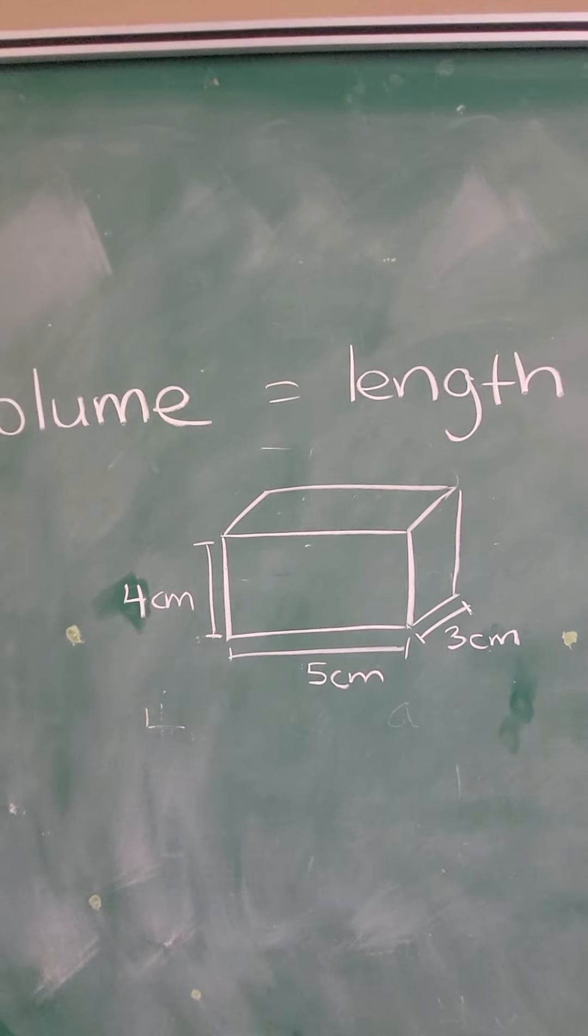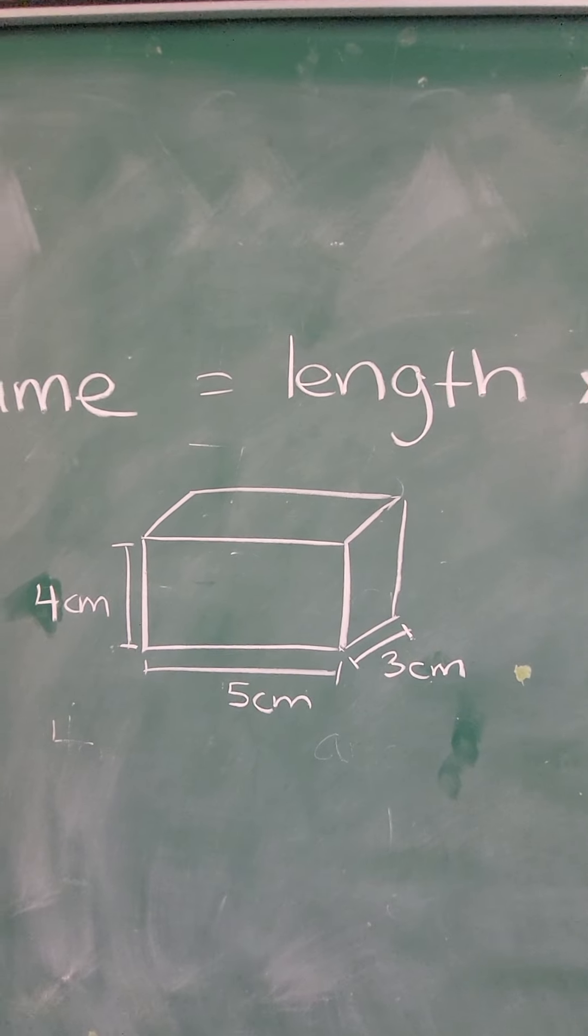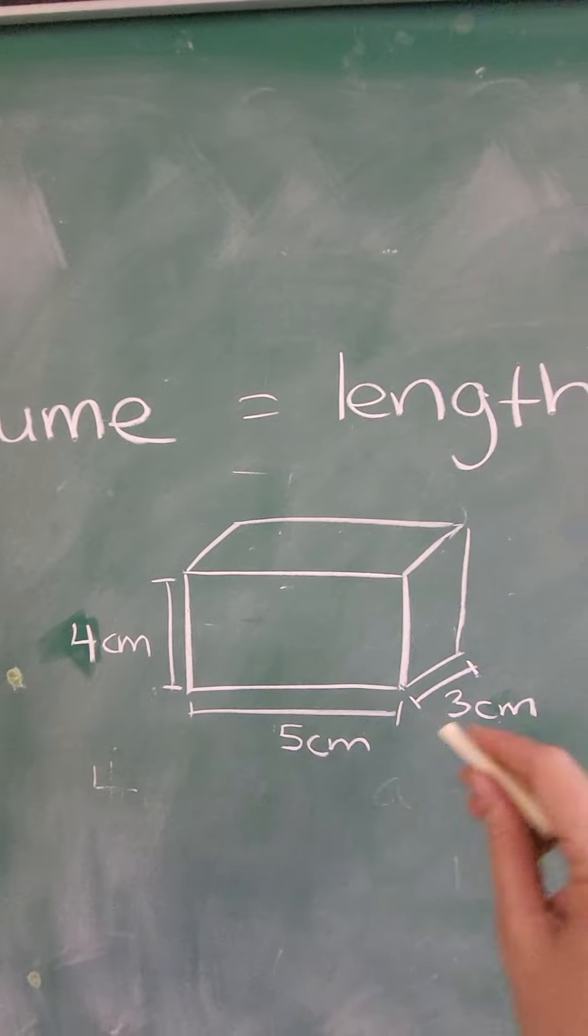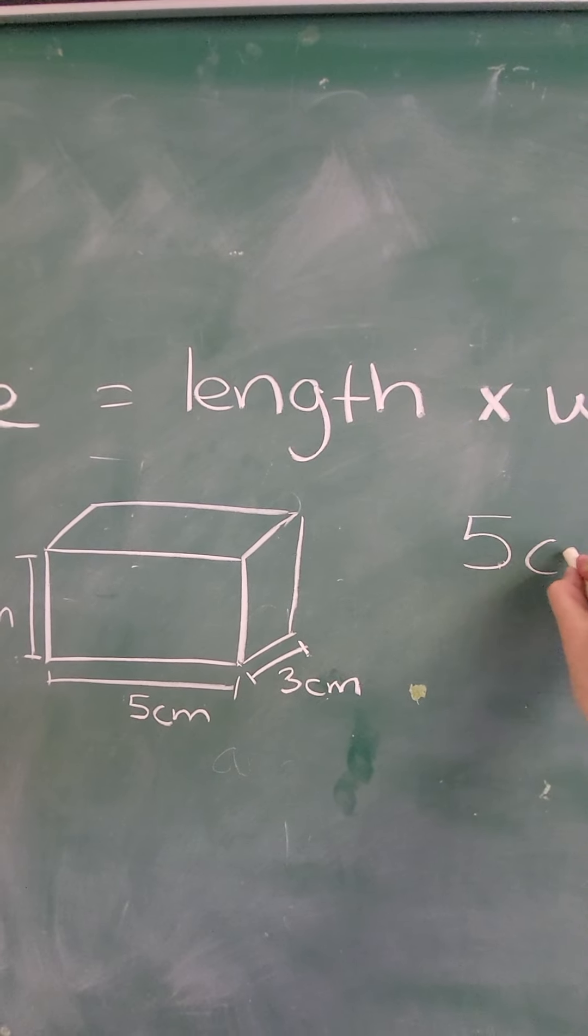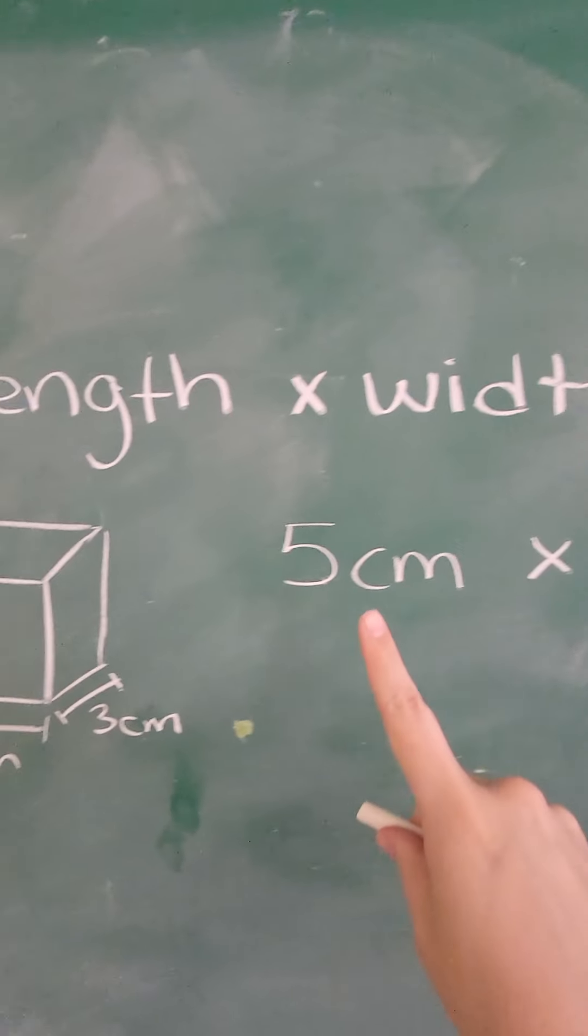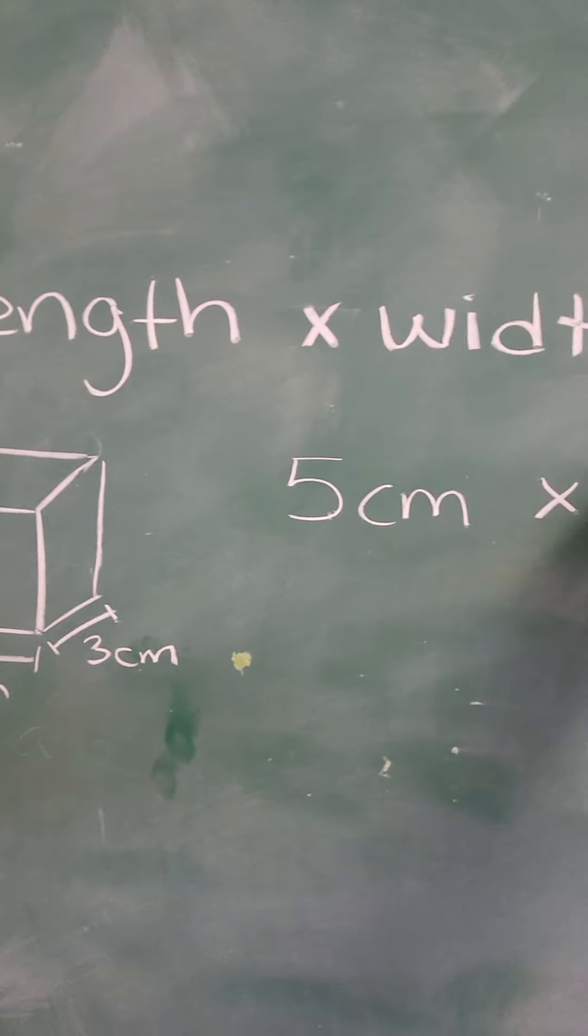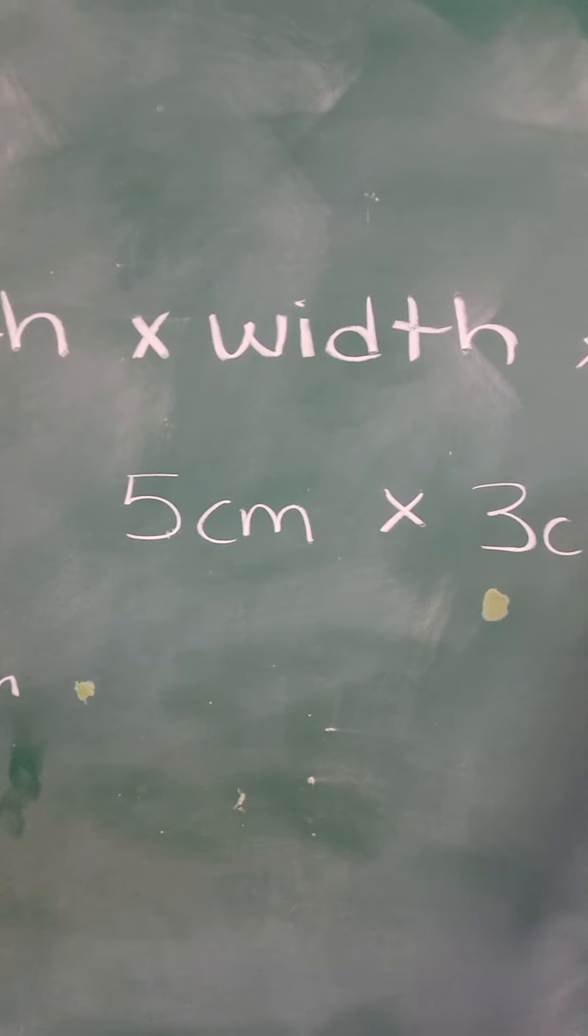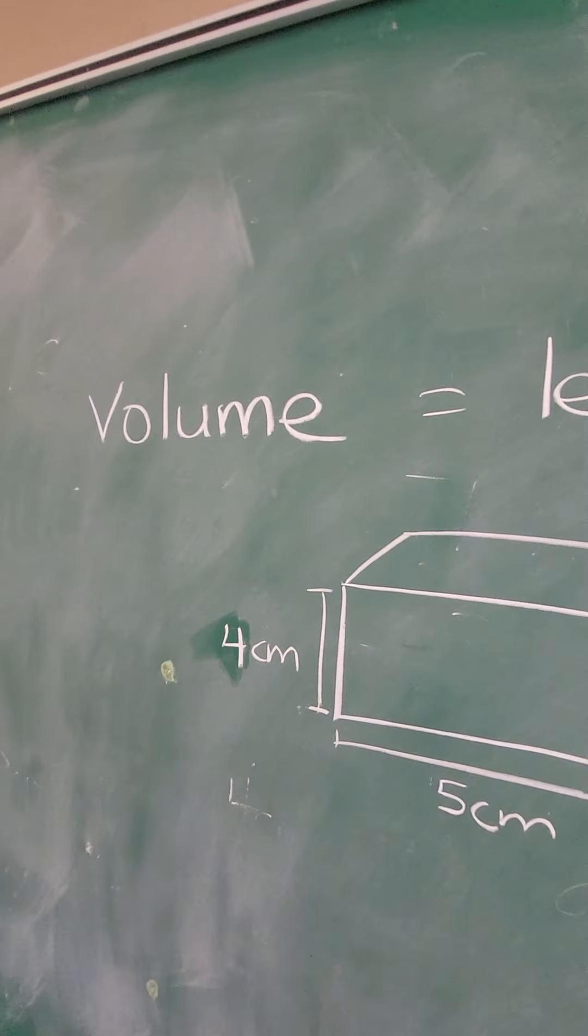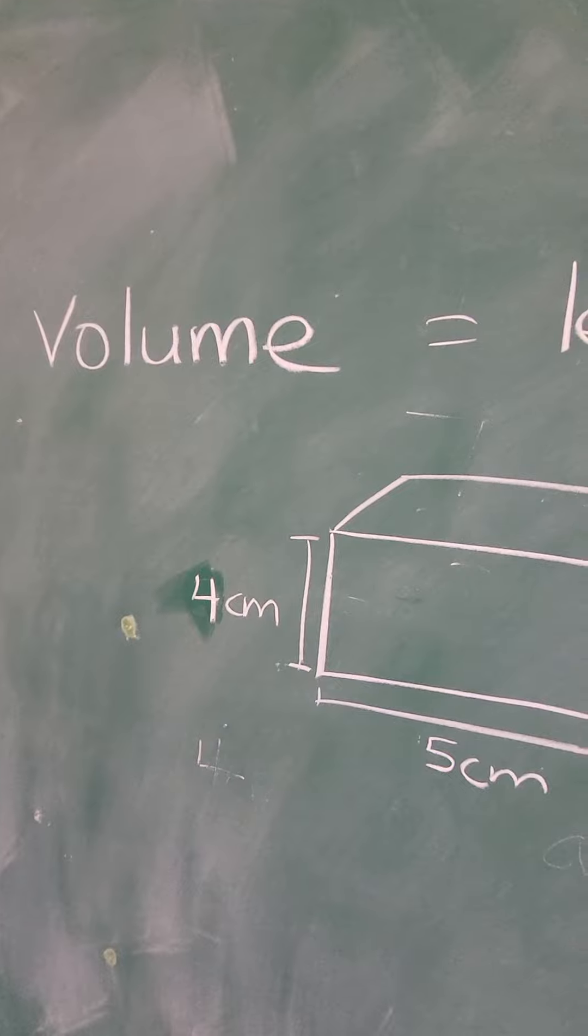So if we were to find the volume of this particular shape, all we'd have to do, the length, 5 centimeters, times the width, 3 centimeters, times the height, in this case, 4 centimeters.